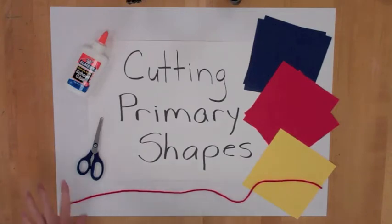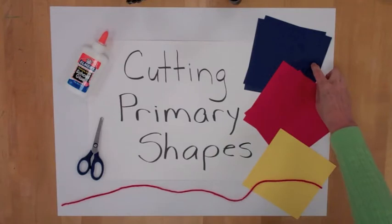You will need a bottle of glue, scissors, a piece of string, two blue, two red, and one yellow piece of paper cut six by six.